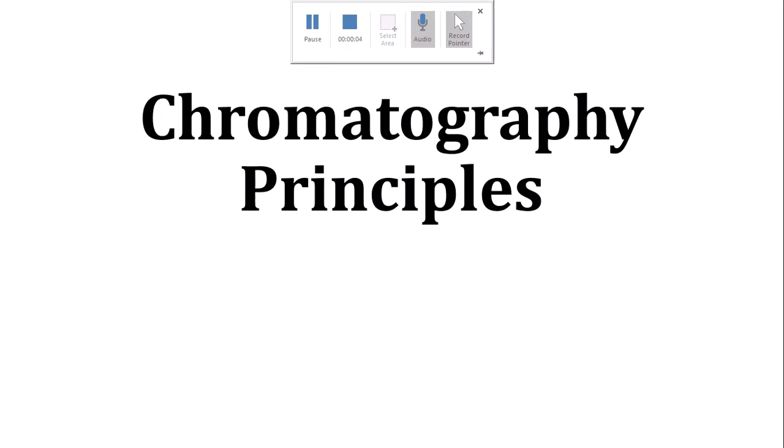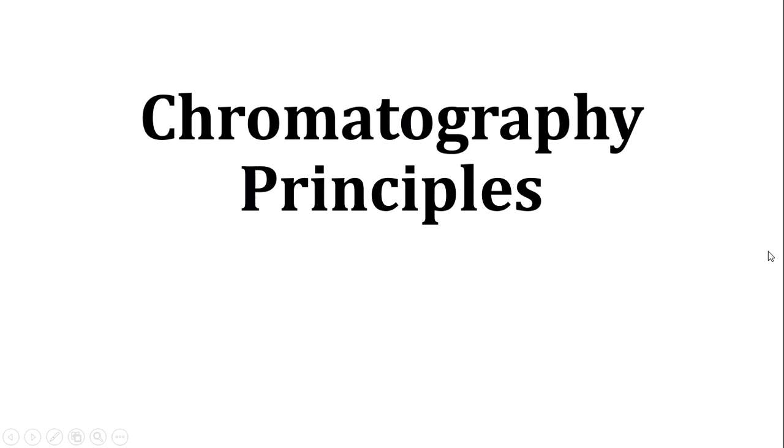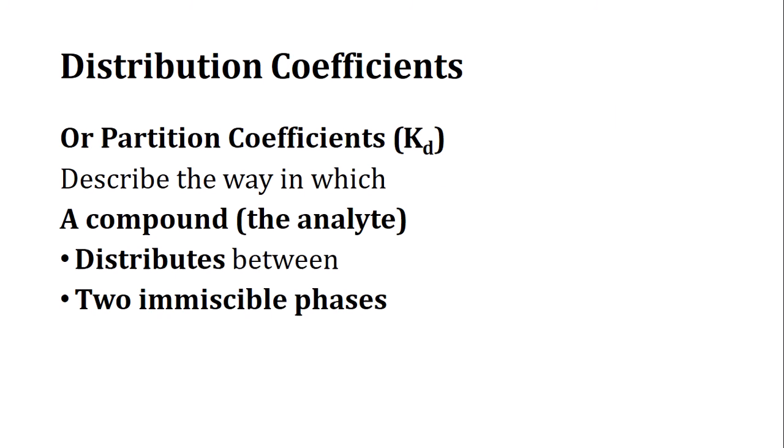In this unit, we will first discuss a few points related to chromatography principles, then go into the types of chromatography, and at the end we will cover chromatography performance parameters. Starting from the very basic principle, which is the distribution coefficient, also called the partition coefficient — it describes the way in which a compound or analyte distributes between two immiscible phases.